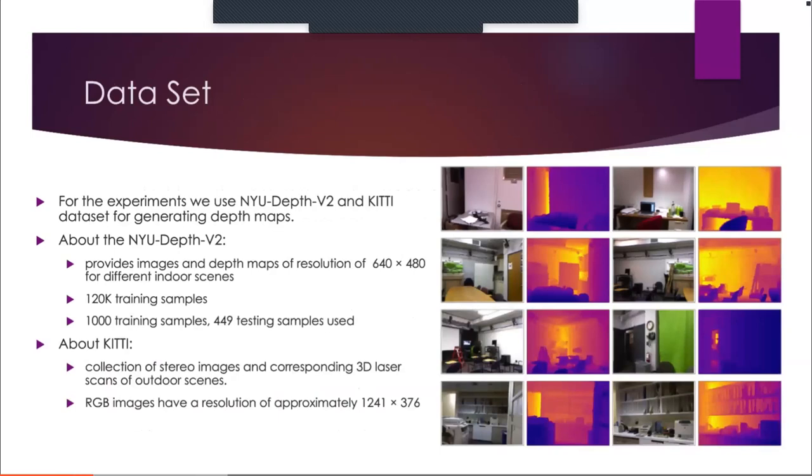For the experiment, we will be using the most commonly used datasets for monocular depth estimation, which are NYU depth v2 and KITTI. The NYU depth v2 dataset is comprised of video sequences for a variety of indoor scenes and has both RGB images and depth images captured using Microsoft Kinect. It has around 1449 densely labeled pairs of aligned RGB and depth images.